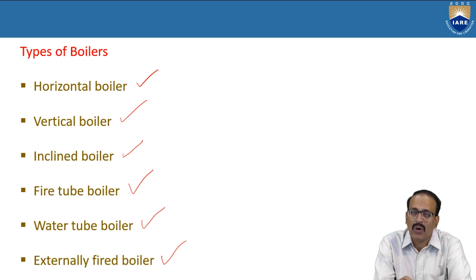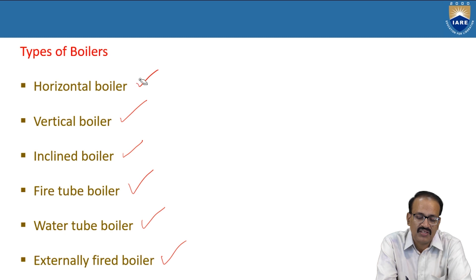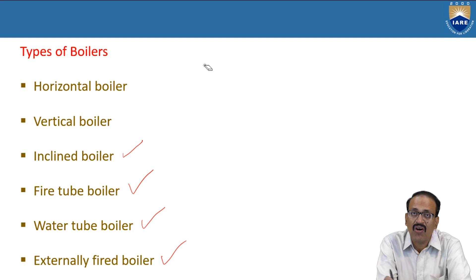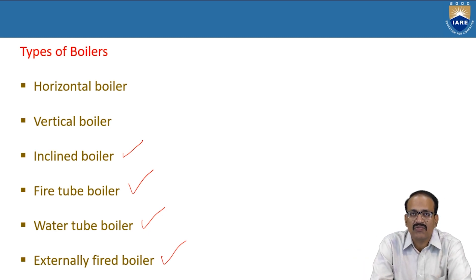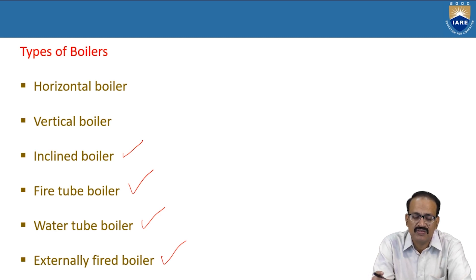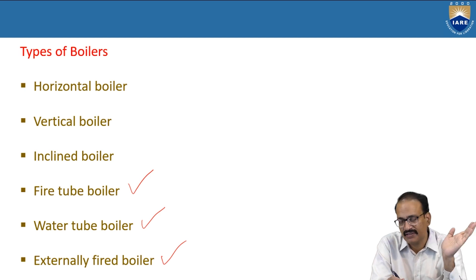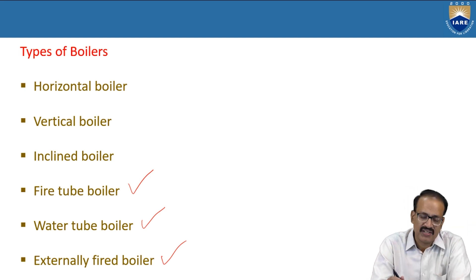In the horizontal boiler, the name itself tells us — the pipes will be horizontal to the ground. In the vertical boiler, the pipes will be vertical, that means perpendicular to the ground. In the inclined boiler, the pipes will be at some angle of inclination.